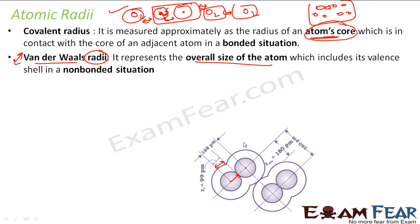With van der Waals force we have van der Waals radius, which represents the overall size of the atom. If you see two independent oxygen molecules, the distance between them divided by 2 gives the van der Waals radius. This represents the whole atom, while the covalent radius represents only the atom's core. So when we talk about bond length, we use covalent radius — adding the covalent radii of the two atoms — not the van der Waals radius.